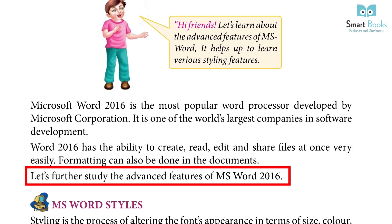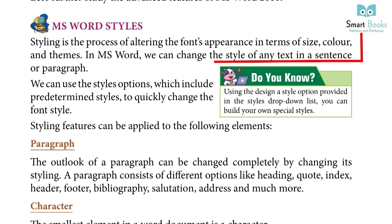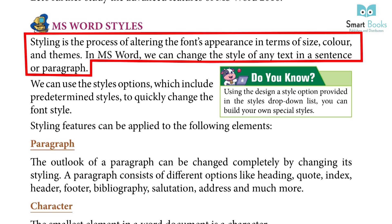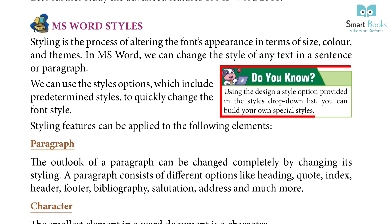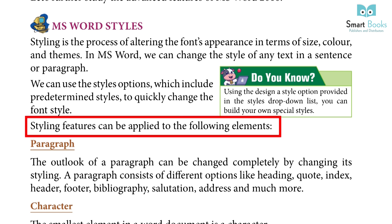MS Word Styles: Styling is the process of altering the font's appearance in terms of size, color and themes. In MS Word, we can change the style of any text in a sentence or paragraph. Using the design style option provided in the styles drop-down list, you can build your own special styles. We can use the styles option which includes predetermined styles to quickly change the font style.